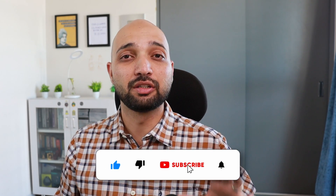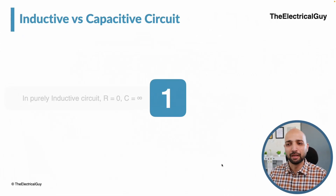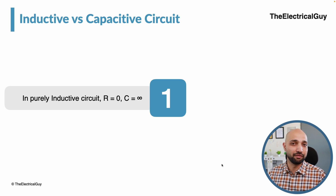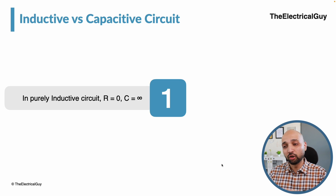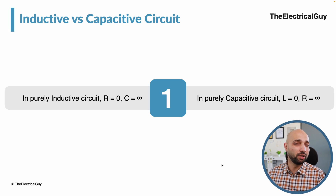In this video we are going to talk about the major differences between a purely inductive circuit and a purely capacitive circuit — talking about the complete circuit, not a standalone inductor and capacitor. A purely inductive circuit has zero resistance and infinite capacitance. On the other hand, a purely capacitive circuit has zero inductance and infinite resistance. That is the first difference.